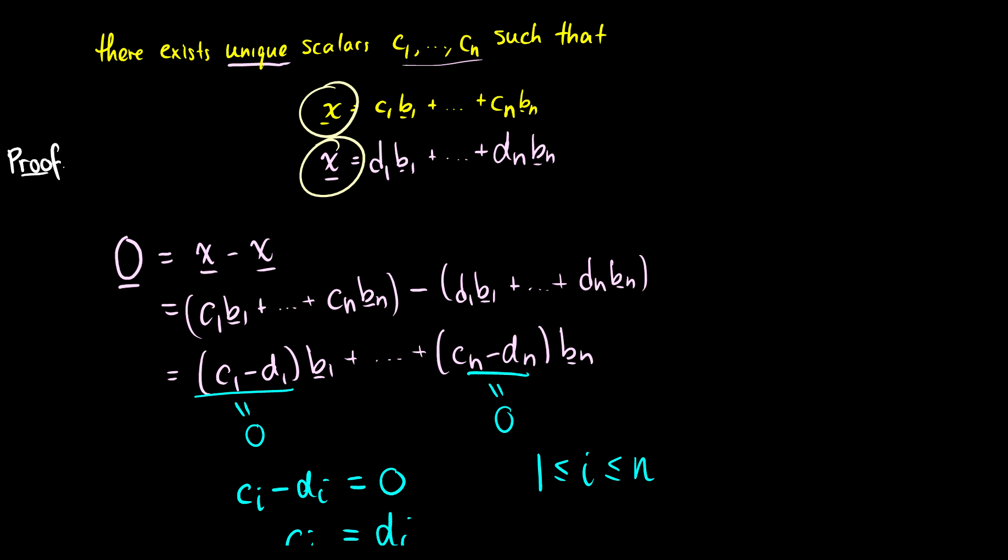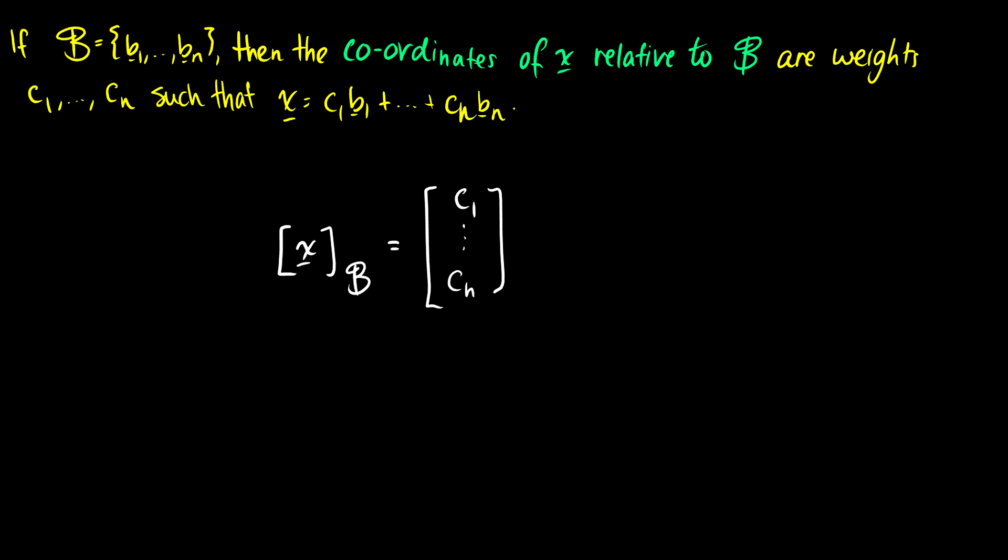That's the unique representation theorem. Now that we have it, we can talk about the coordinates of x relative to b. If we have a vector x expressed relative to b, the coordinate vector is just the coefficients c1 through cn of the linear combination equation.